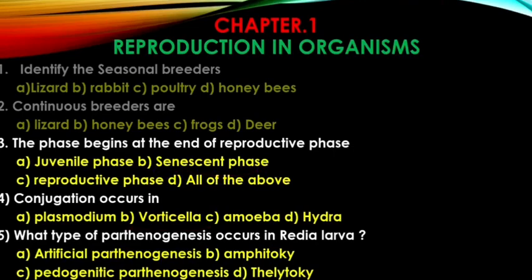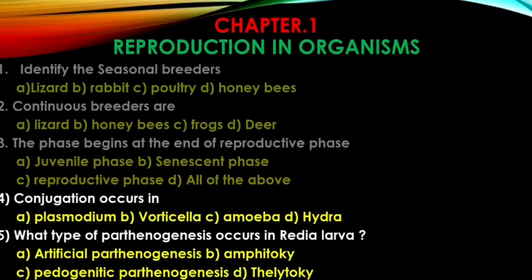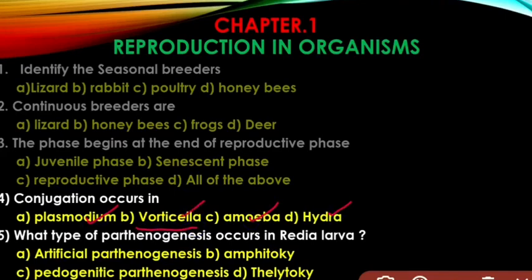Question 4: Conjugation occurs in Paramecium. In Plasmodium, multiple fission occurs; in Amoeba, binary fission; in Hydra, budding. So the answer is Paramecium.